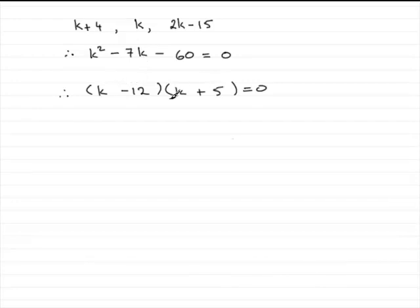So we've got this. So in the usual way, that means that either k minus 12 will equal 0 or the other factor, k plus 5, equals 0.